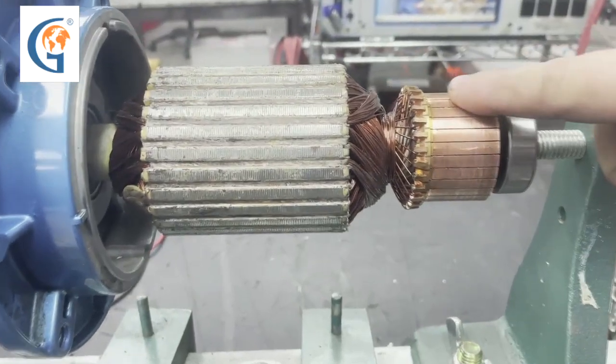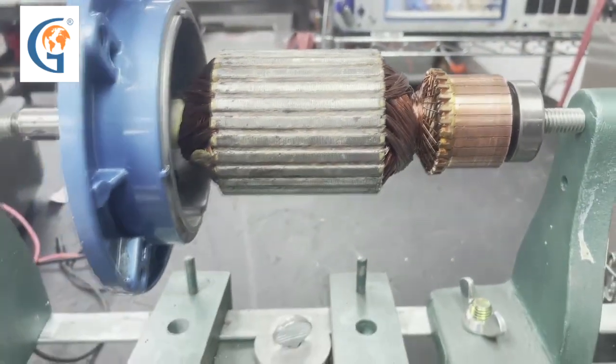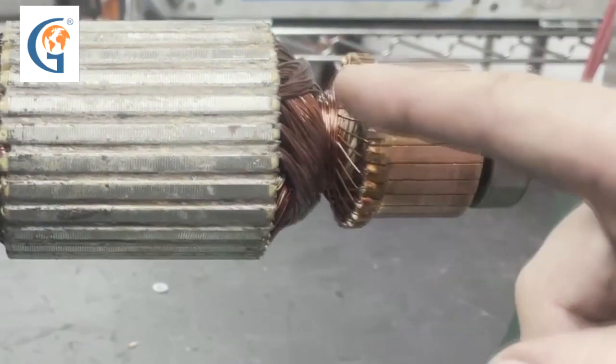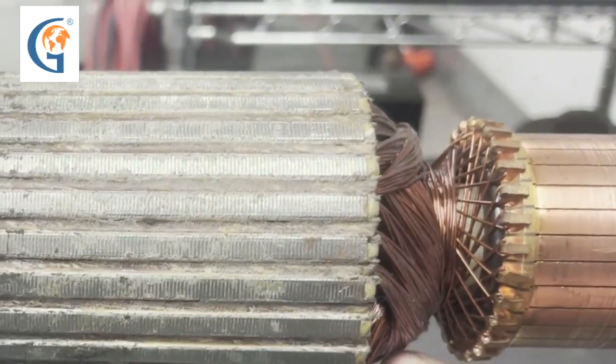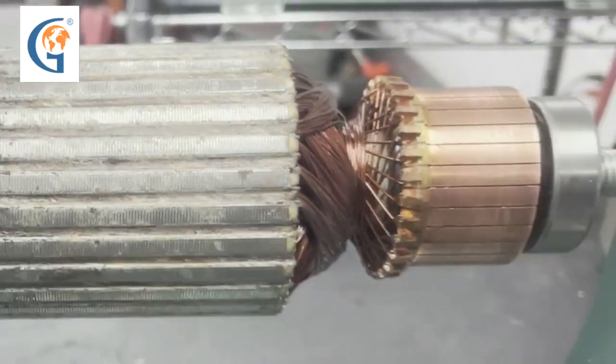And what we are going to be doing is a DC bar-to-bar test, so that we can determine if there are any turn-to-turn shorts in the windings of the armature. We'll be using one of our bar-to-bar testers here.